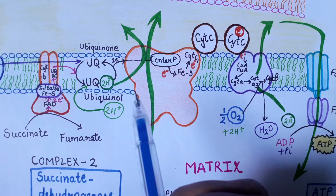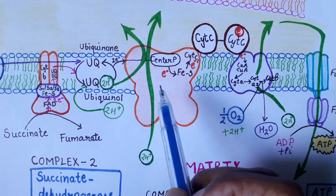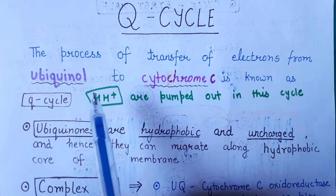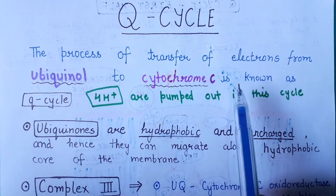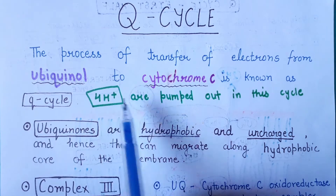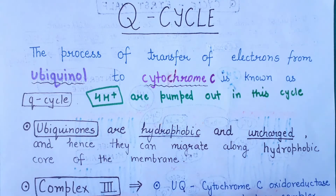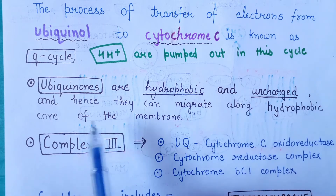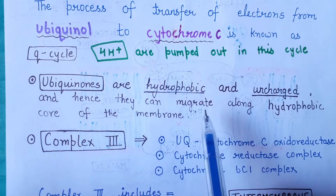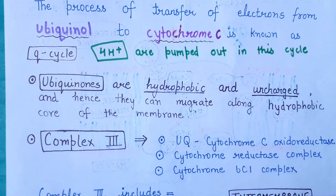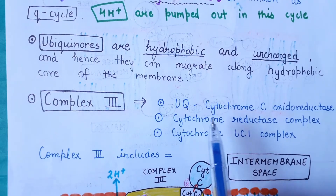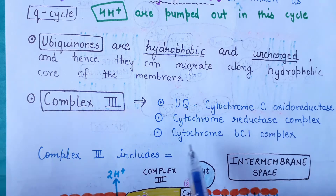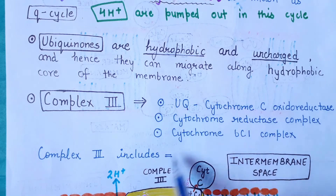The second major component is complex III, which consists of substances responsible for electron transfer. The Q cycle involves the transfer of electrons from ubiquinol to cytochrome C, and in this process four protons are pumped out of complex III. Complex III is also called ubiquinone-cytochrome C oxidoreductase, cytochrome reductase complex, or the cytochrome BC1 complex.